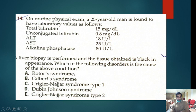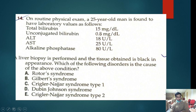This is a case of isolated hyperbilirubinemia — only bilirubin is raised, all enzymes are normal. These are congenital hyperbilirubinemia conditions. Unconjugated hyperbilirubinemia is seen in Crigler-Najjar type 1, type 2, and Gilbert syndrome. But here unconjugated bilirubin is normal, so it is conjugated hyperbilirubinemia, leaving only two conditions: Rotor syndrome and Dubin-Johnson syndrome.